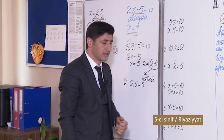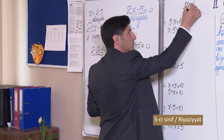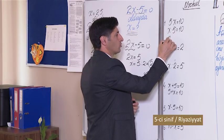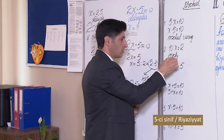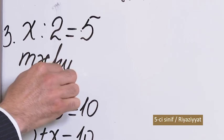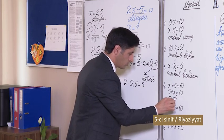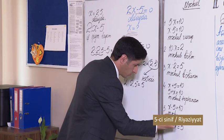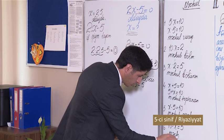Aşağı siniflərdən bu şəkildə verilmiş tənliklərlə tanışsınız. Tənlikdə verilən dəyişənə məchul da deyəcəyik - yəni qiymətinin tapılması tələb olunan dəyişən. Birinci tənlikdə məchul vuruqdur. İkinci tənlikdə məchul böləndir. Üçüncü tənlikdə məchul bölünəndir. Dördüncü tənlikdə məchul toplanandır. Beşinci tənlikdə məchul azalandır. Altıncı tənlikdə məchul çıxılandır.